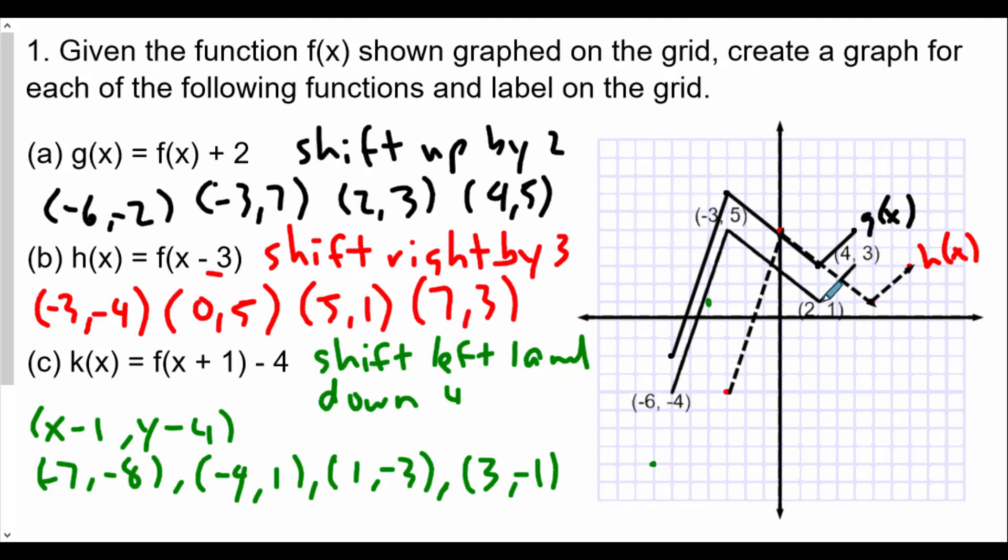For 2, 1, we go left 1 and down 4, 1, 2, 3, 4, and this becomes 1, -3. And finally, our 4, 3, left 1, down 4 is 1, 2, 3, 4, becomes 3, -1.